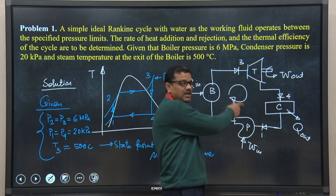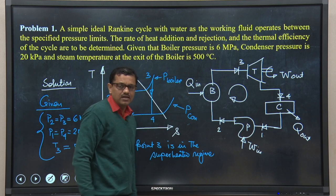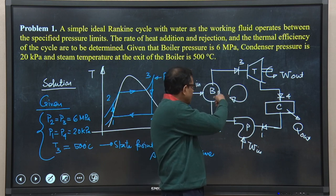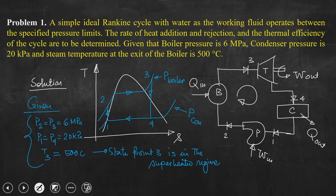The boiler is a heat-interacting device, so we can calculate the heat added. The turbine is a work-interacting device, so we can quantify work output. The condenser is again a heat-interacting device — we calculate Q_out. The pump work input can also be calculated by applying the steady flow energy equation. We can now start solving this problem directly.